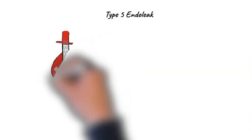The final type is a type 5 endoleak. This is poorly understood — the patient's aneurysm sac expands on surveillance CTs, but there is no obvious source of a leak. It is postulated that it may be due to pressure transmitted from the material of the stent graft through thrombus in the sac to the wall, and there is sometimes an overlap with a type 4 endoleak.